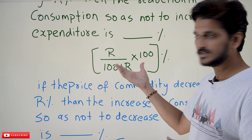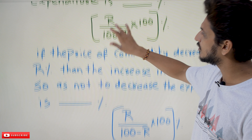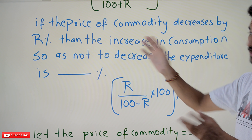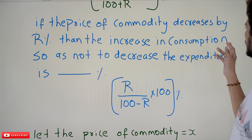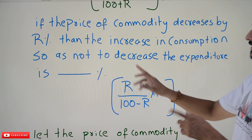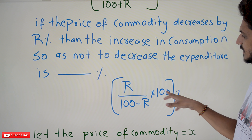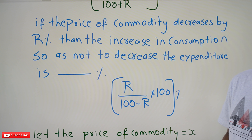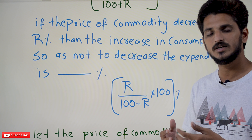Now let's check one more formula. If the price of a commodity decreases by r percent, then the increase in consumption so as not to decrease the expenditure is r divided by (100 minus r), multiplied by 100 percent. Once the first formula is derived, the second one is similar, so you can do it on your own.